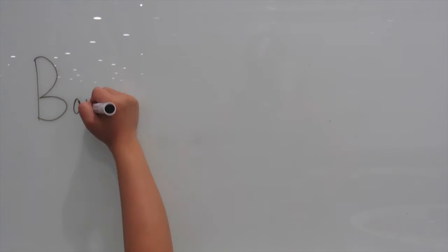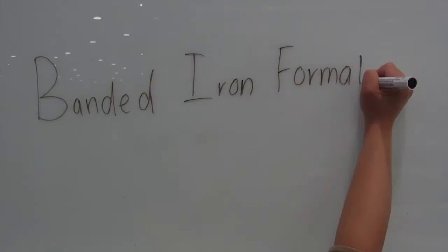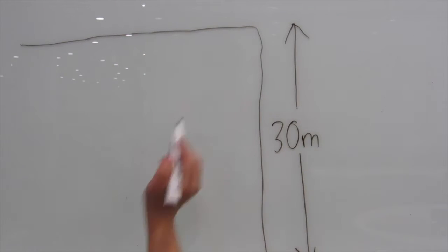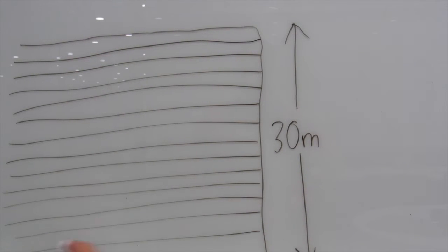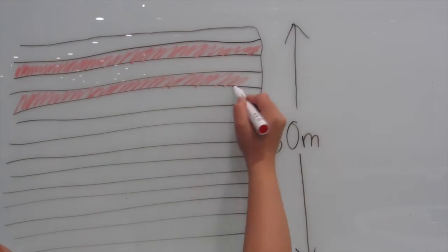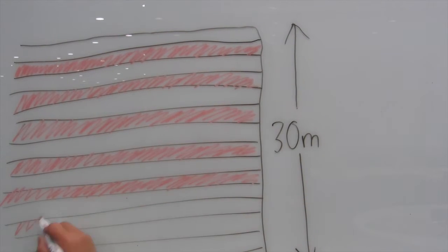BIFs, also known as banded iron formations, are sedimentary rocks found in many areas of the world. They are red and black striped rocks.